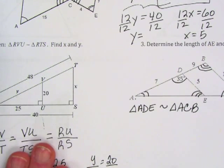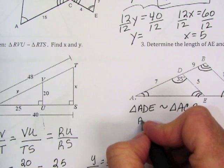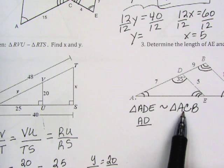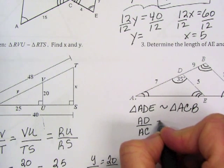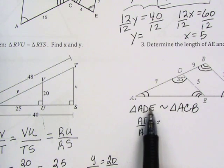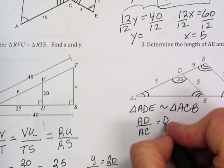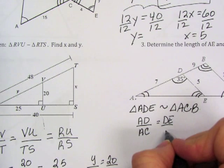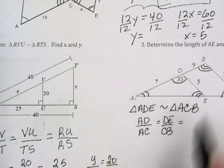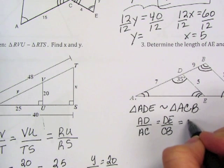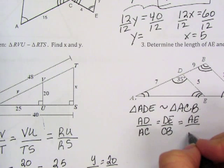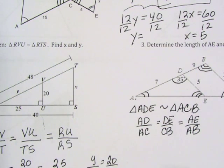Now I can build my equal ratios. So again, AD corresponds to AC. DE corresponds to CB. And AE corresponds to AB. So there are my three equal ratios.